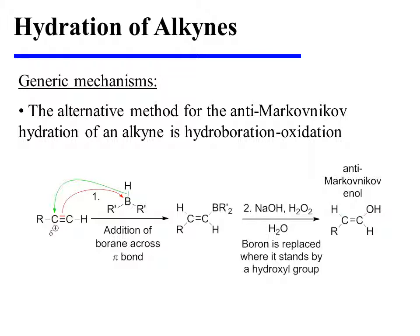This occurs with anti-Markovnikov regiochemistry. The alkyne pi bond attacks the electrophilic boron so as to place the developing partial positive charge on the carbon that can bear it more stably, and that is the more highly substituted secondary carbon. This developing partial positive charge then draws in electrons from the boron-hydrogen bond, and the result is the net addition of both hydrogen and boron across the alkyne pi bond.